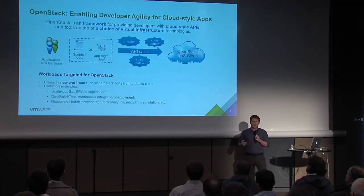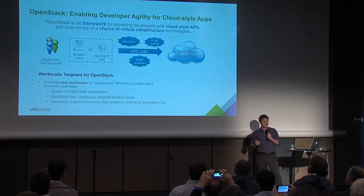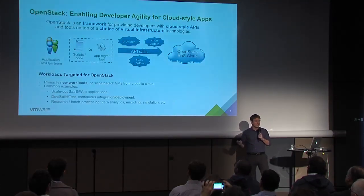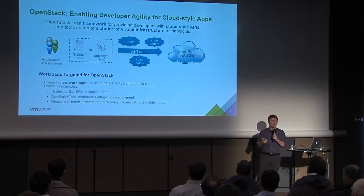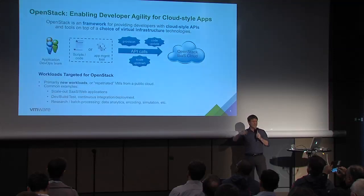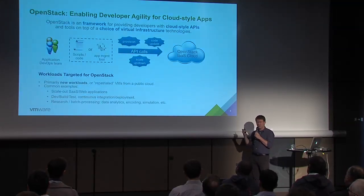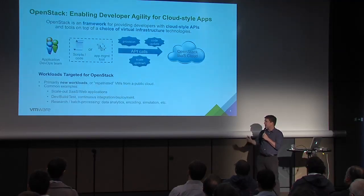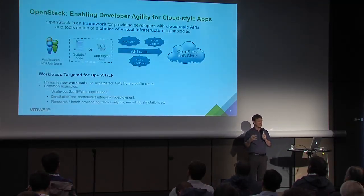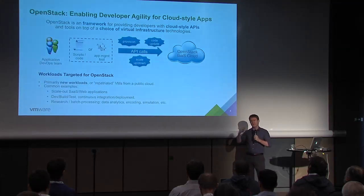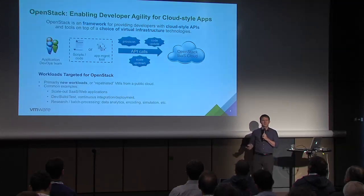Where we've seen customers be most successful with OpenStack tends to be around scale-out web applications or build, dev, test, and continuous integration — where the ability to dynamically interact with the infrastructure is fundamental to the application. You could technically run a traditional IT application on OpenStack, but if it's something you deploy once and never touch again, programmatic APIs aren't all that interesting. Another big area we've seen is analytics or batch workloads — data comes in, you spin up a bunch of jobs, they process the data, they're done. That's really where the vast majority of our customer interest in OpenStack lies: programmatic consumption of the infrastructure.